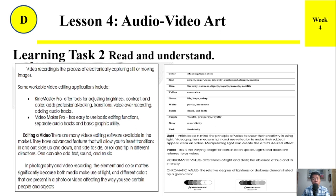Learning Task Number 2. Read and understand. Video recording is the process of electronically capturing still or moving images. Some workable video editing applications include ShineMaster Pro and Video Maker Pro. Editing a video: there are many video editing software available in the market. They have advanced features that allow you to insert transitions in and out, slide up and down, side to side, or roll and flip in different directions. One can also add text, sound, and music. In photography and video recording, elements and color matter significantly because both media make use of light and different colors that are present in a photo or video, affecting the way you see certain people and objects.